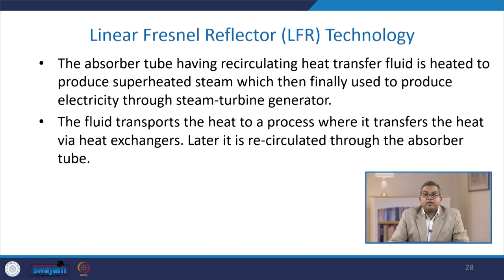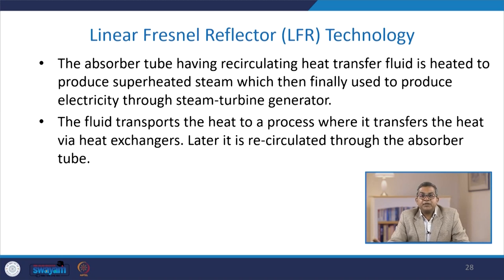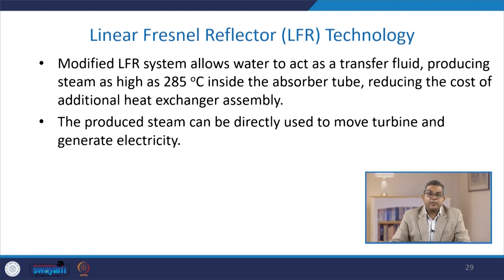The absorber tubes have recirculating heat transfer fluid which is heated to produce superheated steam, which is then finally used to produce electricity through steam turbine generators. The fluid transports the heat to a process where it transfers the heat via heat exchangers, and later it is recirculated through the absorber tube. The modified LFR system allows water to act as the transfer fluid or heat transfer media, producing steam as high as 285 degree Celsius inside the absorber tube, and by this way you can reduce the cost of an additional heat exchanger assembly.